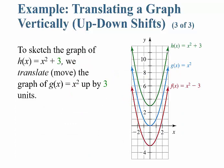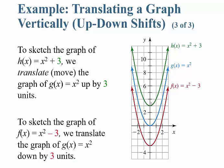The sketch of h of x equals x squared plus 3 — we translate or move the graph of g of x up 3. Similarly, the sketch of f of x equals x squared minus 3 is just taking the x squared and moving it down 3. Whenever you have a plus or minus constant, all it does is move the graph up or down that many units.